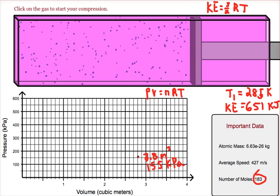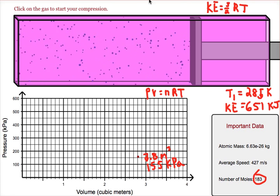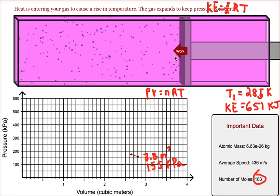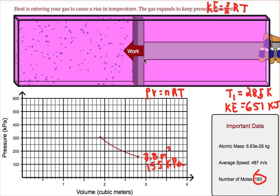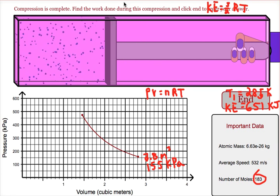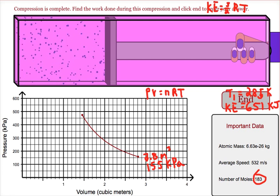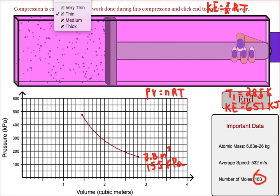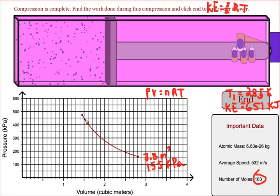Once we have our kinetic energy at the beginning, we'll compress our gas. In this program, we compress the gas by just clicking on it. You can see us pushing the plunger inward — we are doing work and giving energy to the gas molecules. Since our chamber is insulated, no heat was able to get out, so all the work that we did turned into internal energy of the gas.